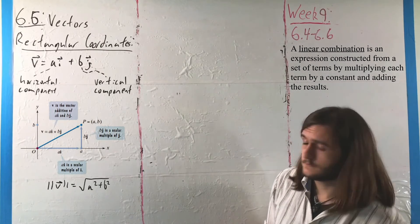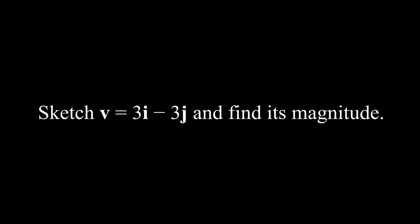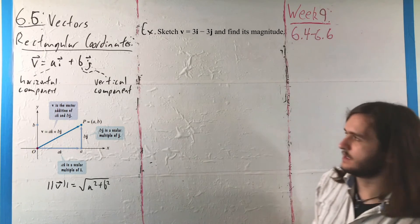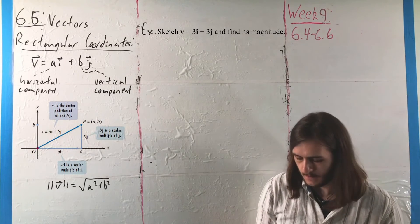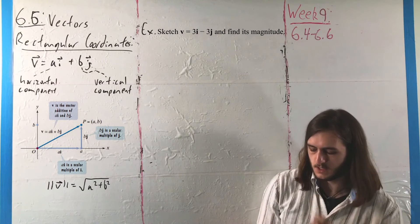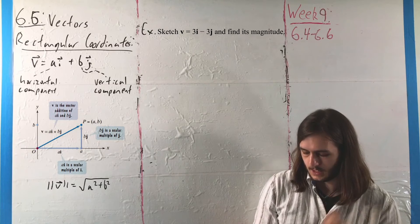To understand this a little more, we'll take a shot at an example. We want to sketch the vector V equals 3i minus 3j and find its magnitude. We have a horizontal component A equals 3 and a vertical component B equals negative 3.